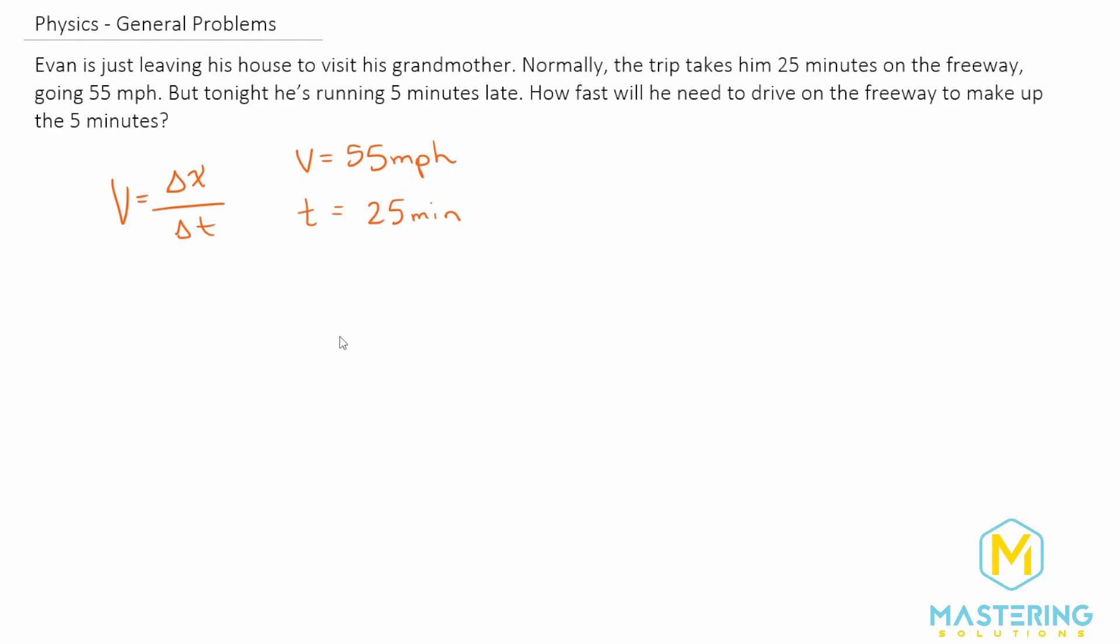We don't know how far he's going, so we're going to solve for x. If we multiply both sides of the equation by delta t, the distance he's going, or delta x, is equal to the velocity times the change in time.